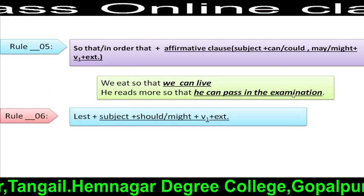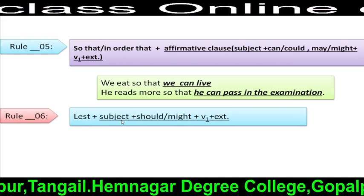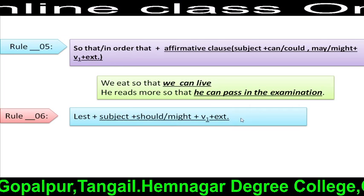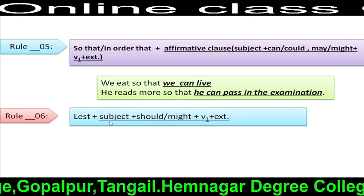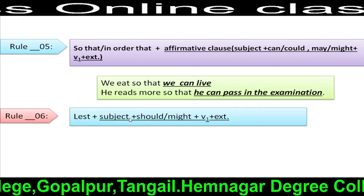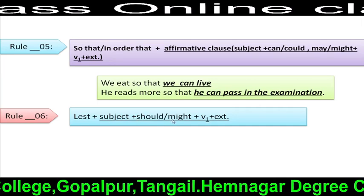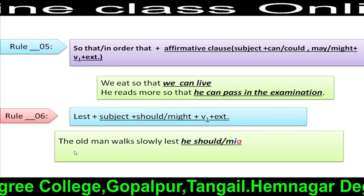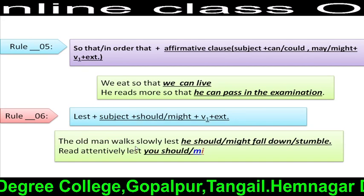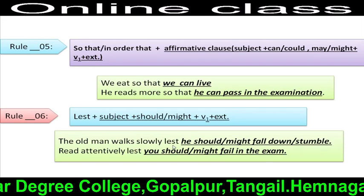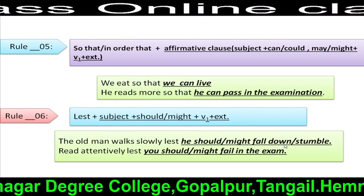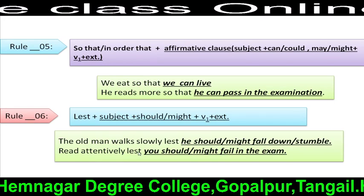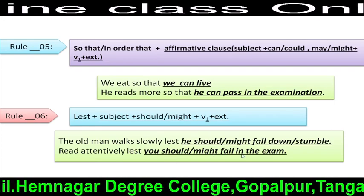Rule 6: Lest + subject + should/might + V1 + extension. That means, after 'lest', we have to use subject + should/might + V1 + extension. For example: 'The old man walks slowly lest he should or might fall down or stumble.' 'Read attentively lest you should or might fail in the exam.'